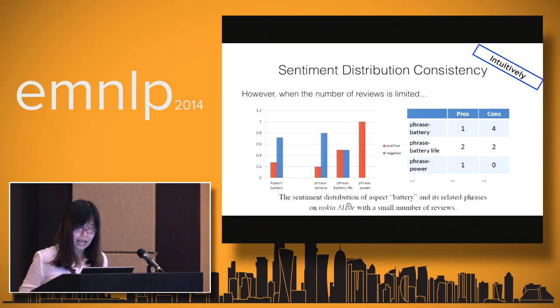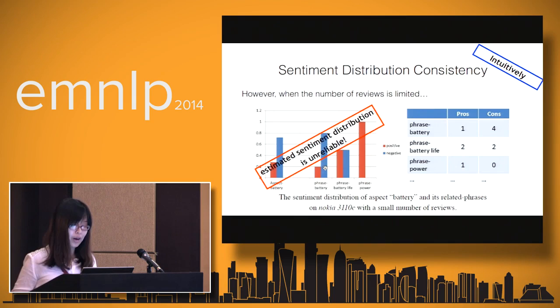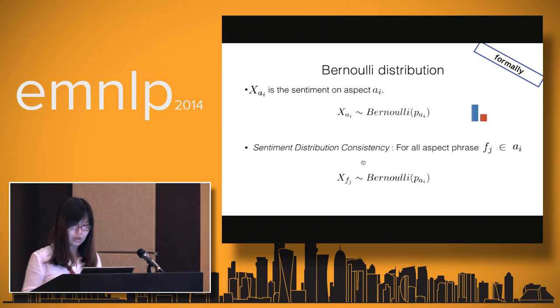There is a review for another Nokia cell phone with a small number of reviews. We also got counting, and we see that we got very limited observations. For example, for the phrase 'power', we only got one observation for pros and zero observations for cons, and the estimated sentiment distribution is very unreliable. Assigning the phrase 'power' to an aspect based on this unreliable sentiment distribution will lead to mistakes.